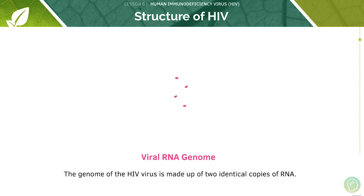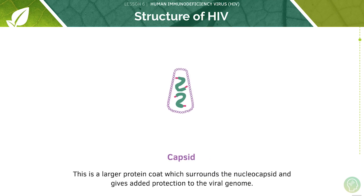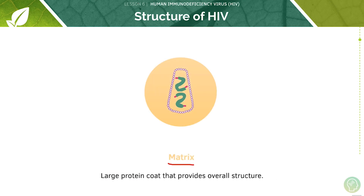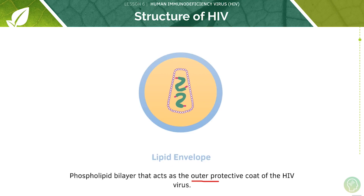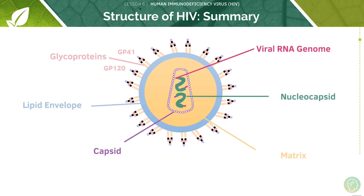The first part is the viral RNA genome, made up of two copies of RNA. Then there is the nucleocapsid, which surrounds the RNA and protects it. The next part is the capsid, a larger protein coat that surrounds the nucleocapsid and gives added protection to the genome. We then have the matrix, which provides the overall structure. The lipid envelope acts as the outer protective coat of the HIV virus. HIV also has two glycoproteins, which are viral attachment proteins that HIV uses to infect its target cell.